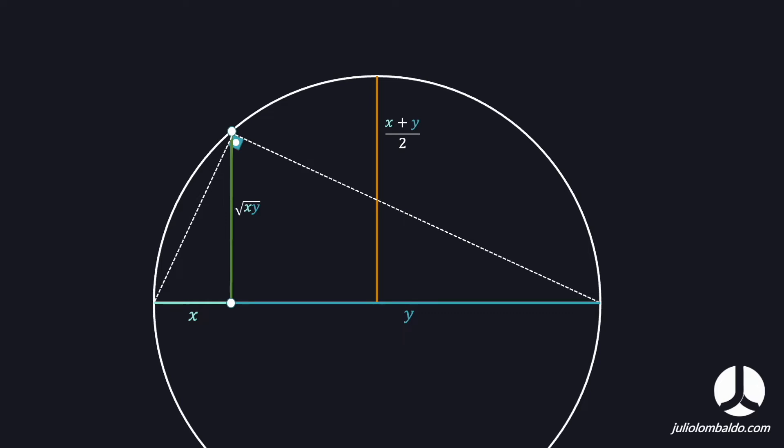The first measure, (X plus Y) divided by 2, is equal to the arithmetic mean. The second one is also a mean, but it's a different kind — it's the geometric mean, which is the square root of X times Y.